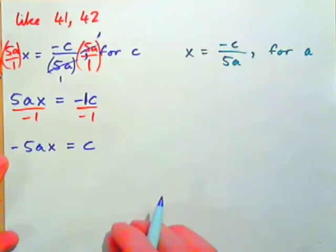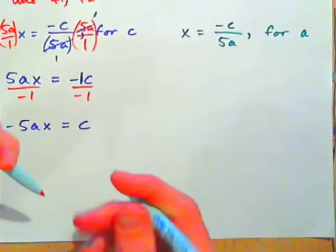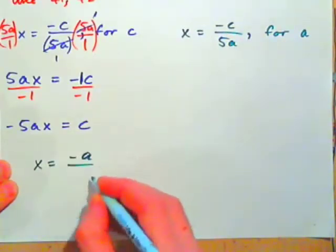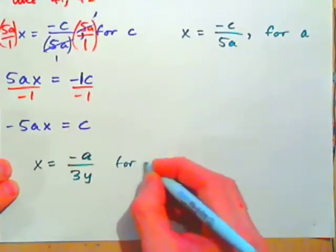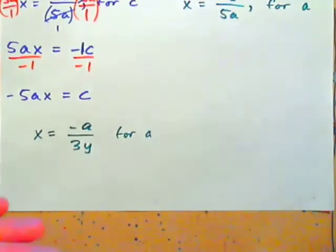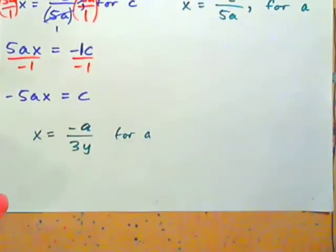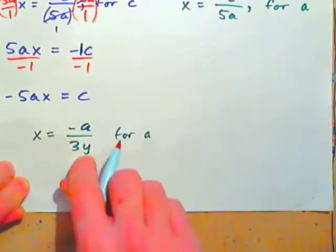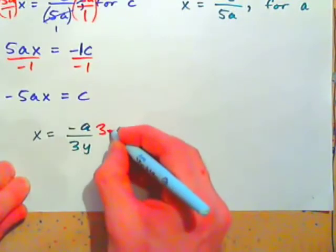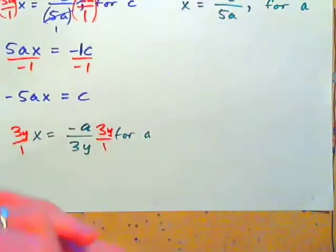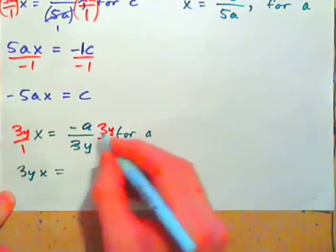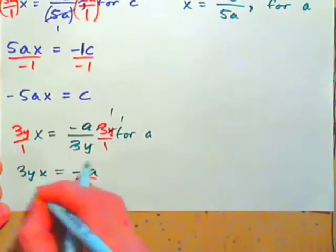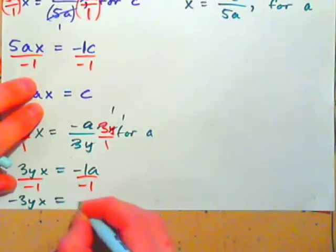For practice: X equals negative A over 3Y — solve for A. Undo dividing by 3Y first by multiplying both sides by 3Y over 1. On the left we get 3YX; on the right the 3s and Ys cancel, leaving negative A. To get A by itself, divide both sides by negative 1: negative 3YX equals A.